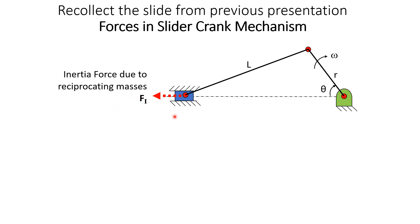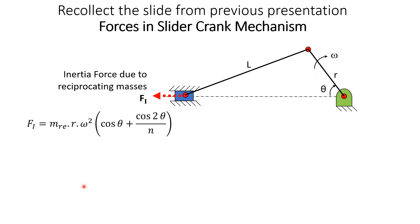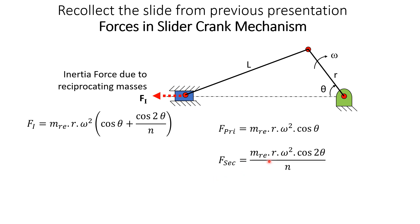Recalling from the previous presentation on forces in the slider-crank mechanism: the inertia force Fi for a connecting rod and crank assembly is given by m_re × r × ω² × (cosθ + cos2θ/n). This can be split into a primary component F_primary = m_re × r × ω² × cosθ and a secondary component F_secondary = m_re × r × ω² × cos2θ/n.